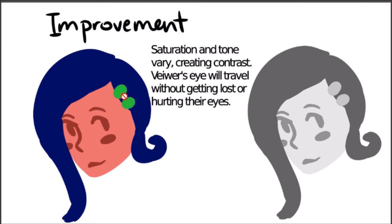I would add the green for a bit of an accent and make sure that the tonal range is different enough that the eye travels directly to what I want them to look at. In this case, the background is white, so the eye will immediately focus on what's darker.